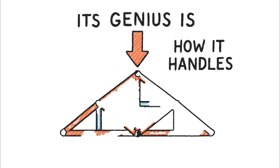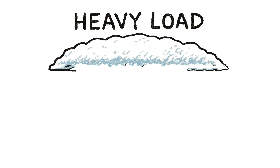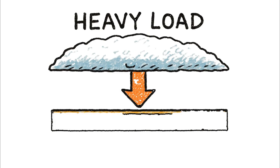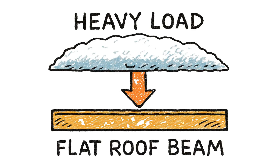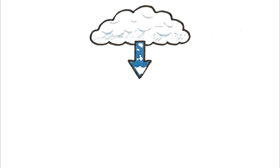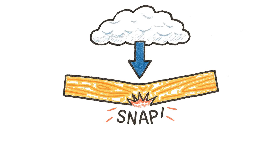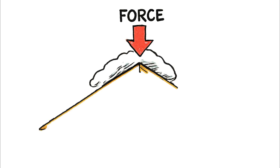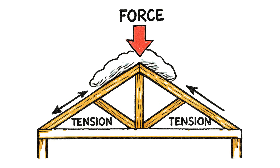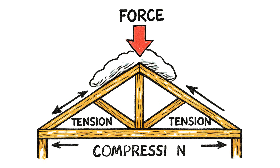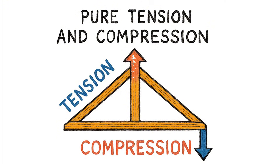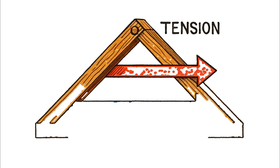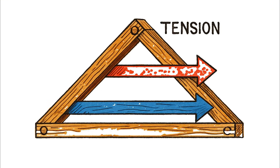A truss's genius is how it handles forces. Think about a heavy load of snow pushing straight down on a flat roof beam — that's a transverse force, and it tries to bend and snap the beam in the middle. A truss takes that downward transverse force and converts it into axial forces, that is, pure tension and compression, that run straight along the length of its wooden members.